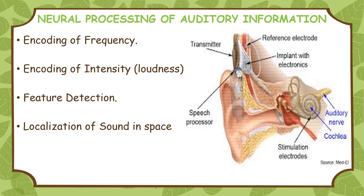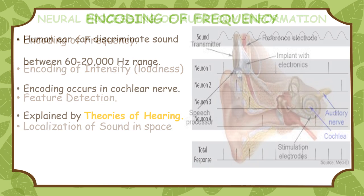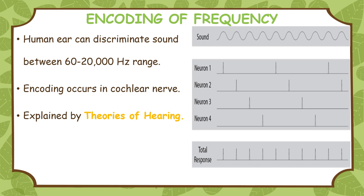Neural processing of auditory information involves encoding of frequency (pitch determination), encoding of intensity (loudness determination), feature detection, and localization of sound in space. Encoding of frequency: the human auditory mechanism has a remarkable power to discriminate between sounds in the range of 60 to 20,000 Hertz. Cochlear nerve fibers encode the frequency of the sound stimulus. There is a duplex theory which includes both the place theory and the frequency theory to explain frequency coding of sound.